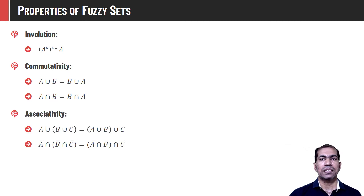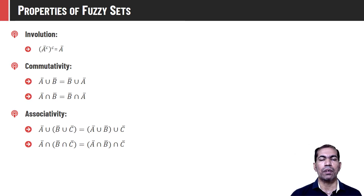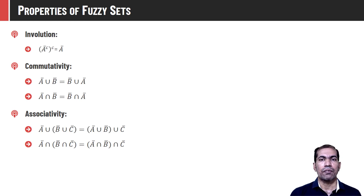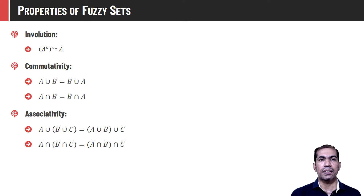Fuzzy sets have the property of associativity — that is, (A union B) union C is the same as A union (B union C), and similarly for intersection: (A intersection B) intersection C is the same as A intersection (B intersection C).